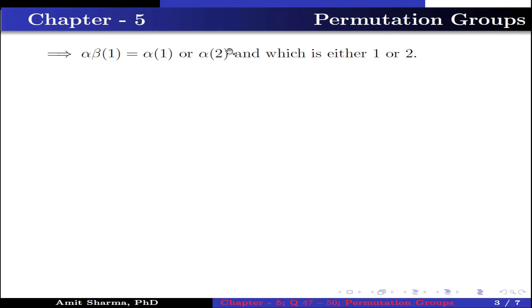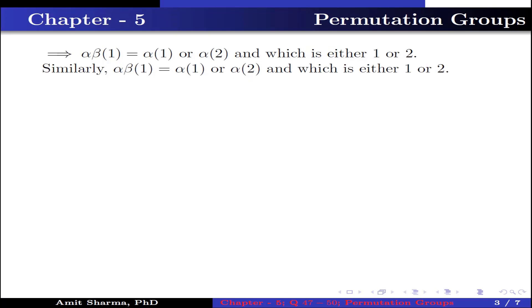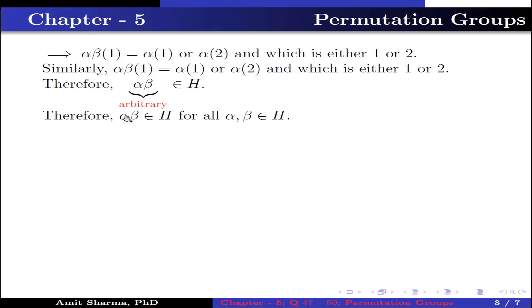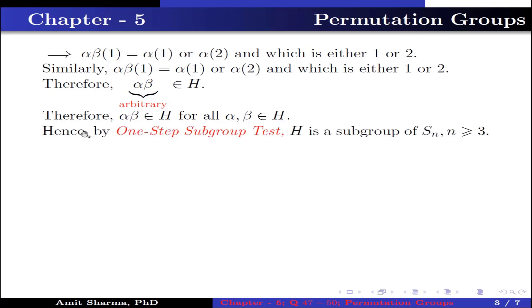When alpha(1) is 1, it is 1. When alpha(1) is 2, it is 2. When alpha(2) is 1, it is 1. When alpha(2) is 2, it is 2. Similarly, the value of alpha·beta of 2 is alpha(1) or alpha(2), which is either 1 or 2. Therefore, alpha·beta, which are arbitrary elements, belongs to H. Hence by the one-step subgroup test, H is a subgroup of S_n for n greater than or equal to 3.